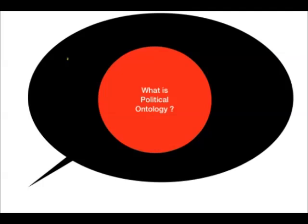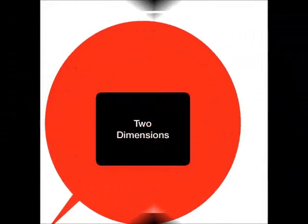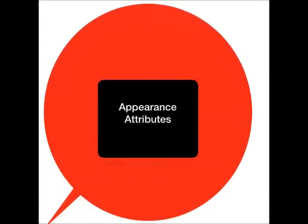First, it is being itself - how anything looks in its appearance. For example, a tree has roots, branches, and trunk. Three dimensions. Appearance attributes or conception of the thing itself has some distinct qualities.